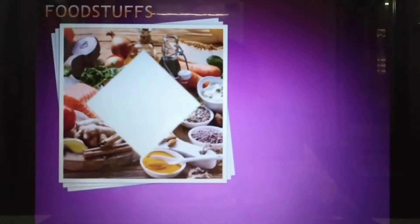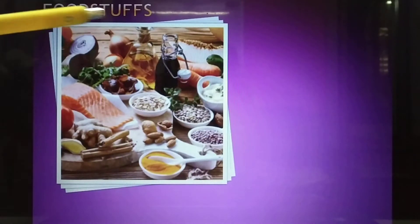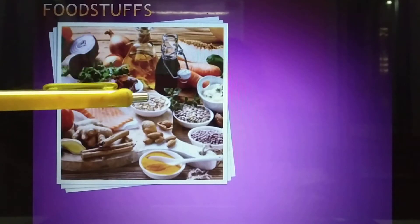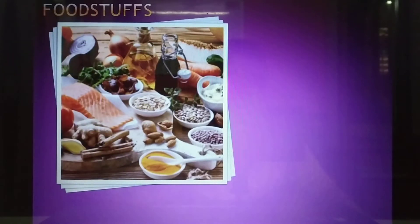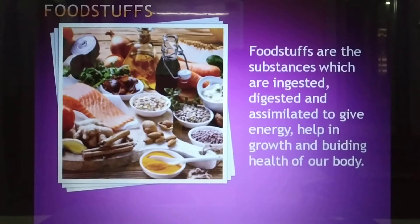From where do we get this nutrition? We get nutrition from foodstuffs. Look at the picture — you see an onion, oil, certain meat, nuts, and various other products. These are products which provide us with nutrition. Foodstuffs are the substances which are ingested, digested, and assimilated to give energy, helping growth and building the health of our body.